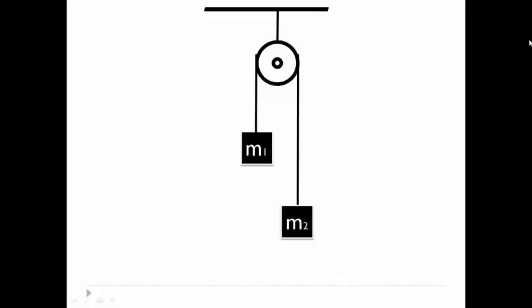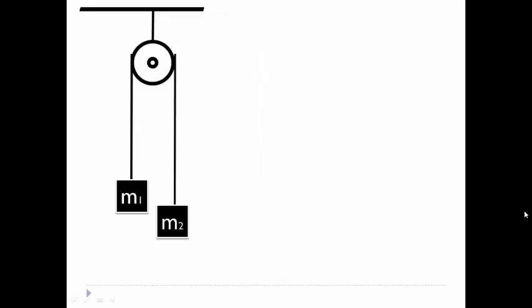Now we shall apply the free body diagram steps to this given system of two masses connected over a frictionless pulley. When such an arrangement is given you have to assume that M2 is going downwards and M1 is going upwards. Now we apply the free body diagram steps.